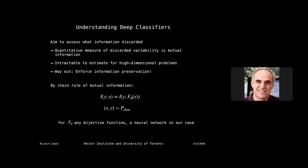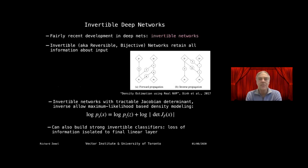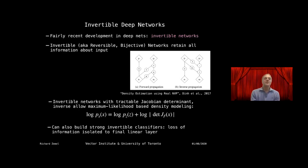[Question: Are you assuming the neural network is a bijective function?] Yes — I'll get to that now. These are invertible networks, also known as reversible, bijective networks, or normalizing flows. The idea is you have a vector X and pass it through a series of invertible transformations. These transformations must be invertible and have a computable Jacobian determinant, enabling the change-of-variables formula: log P(X) = log P(Z) + log |det J|.